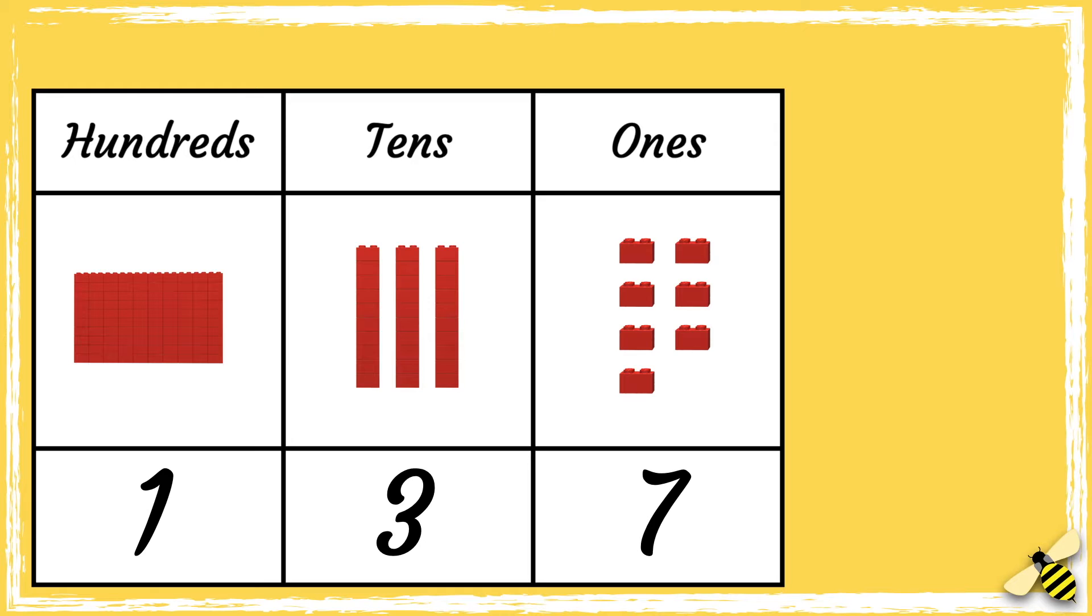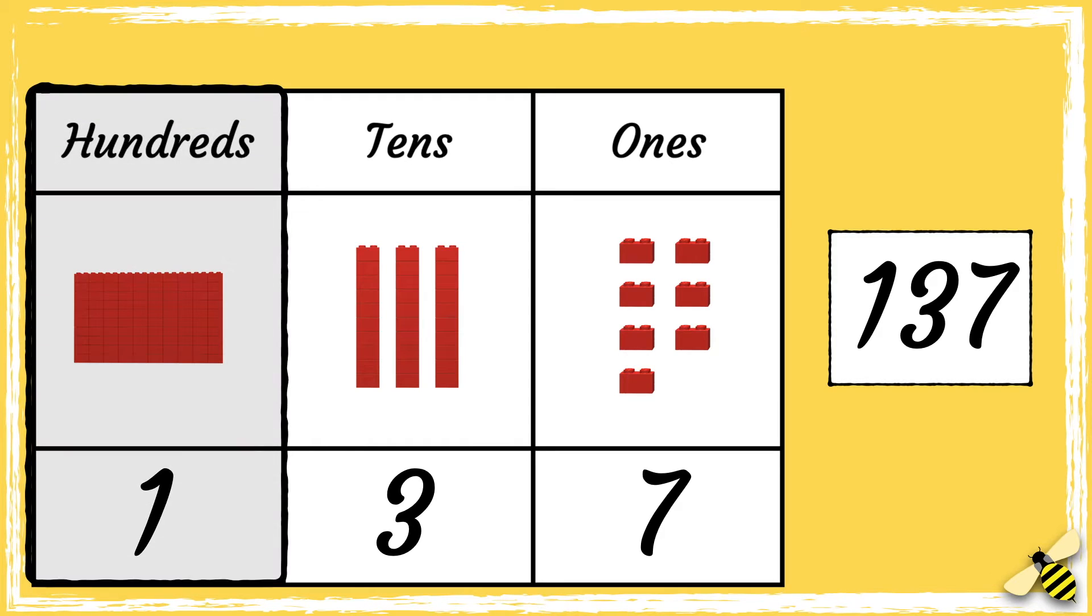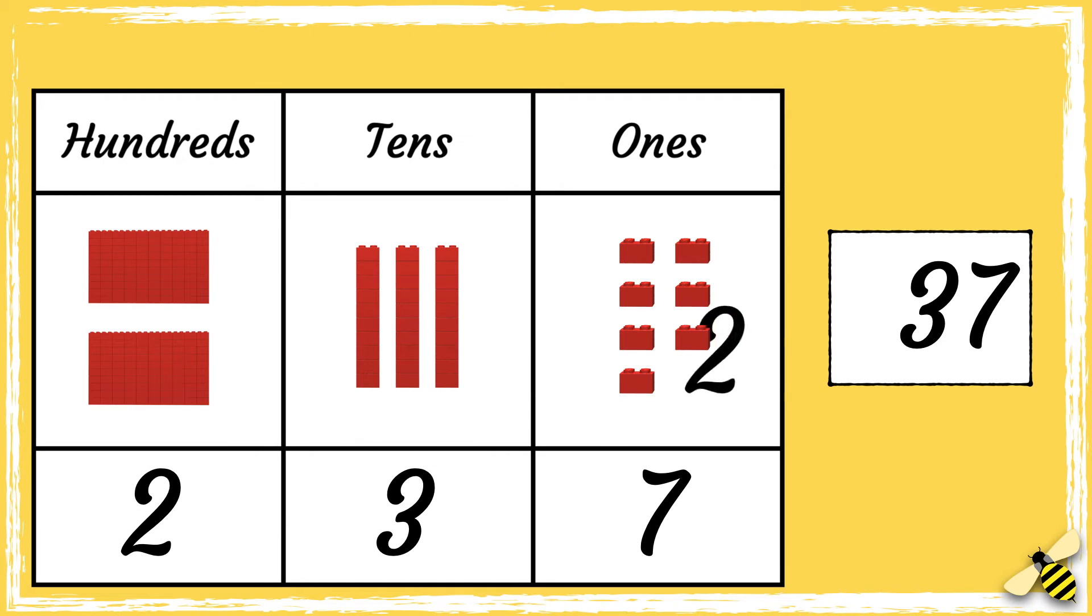Let's have a look at another example. Here is the number 137. When we add 100 to a number, we need to look at the hundreds column. So let's add another hundred. One hundred becomes two hundreds, so the new number is 237.